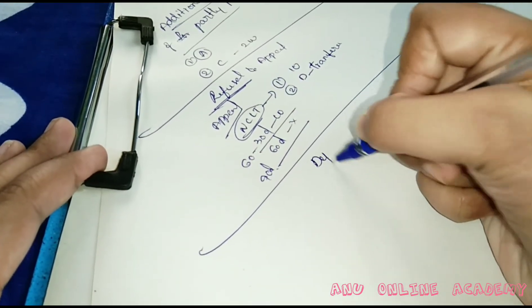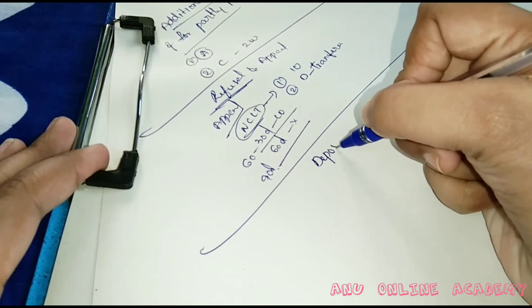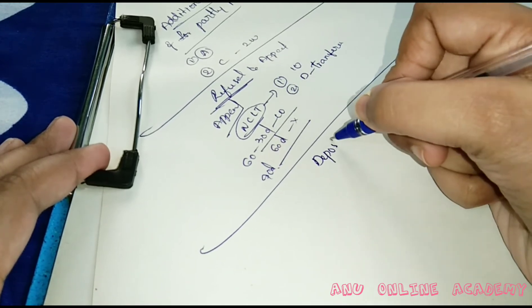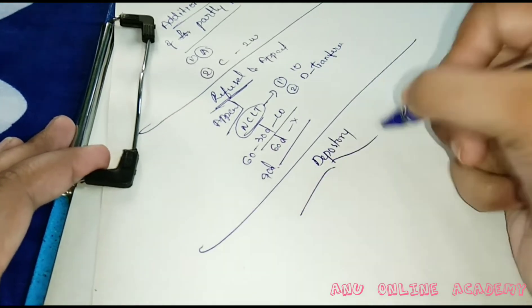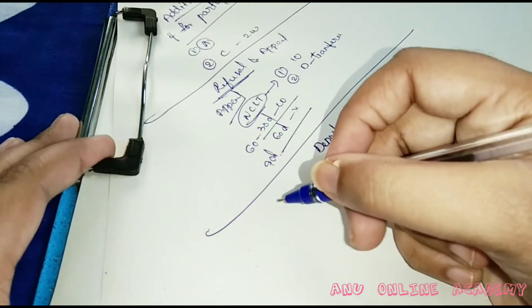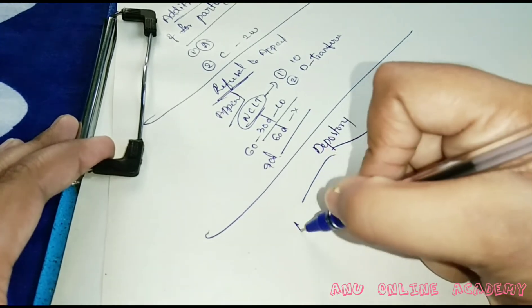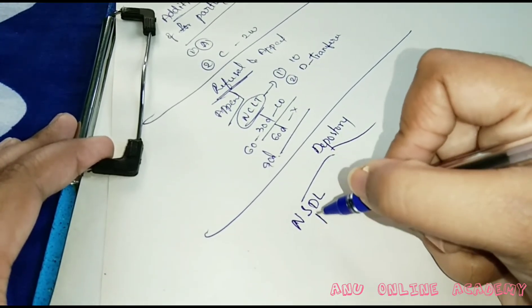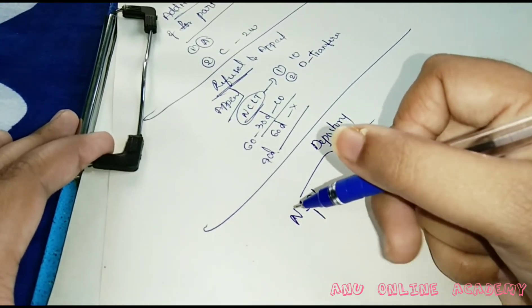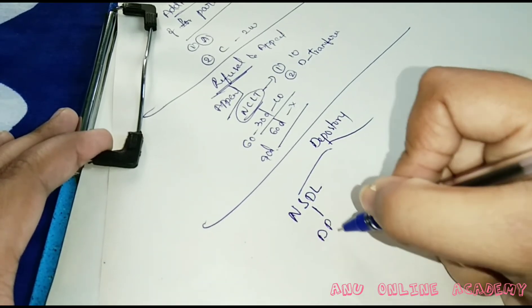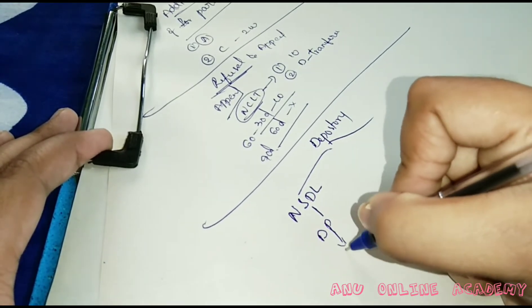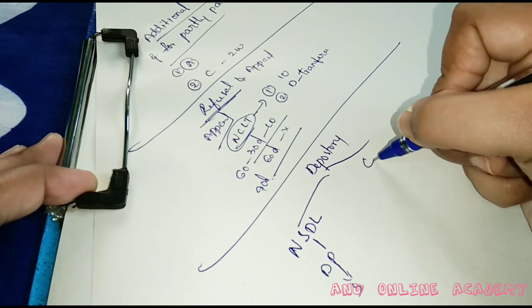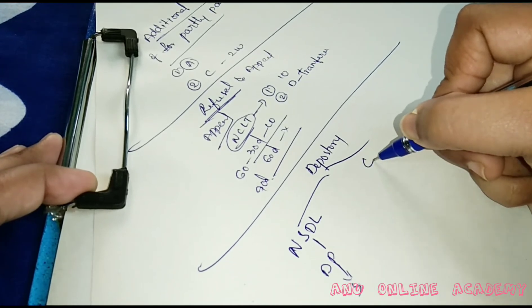Depository: under the National Securities Depository Act 1996, the two depositories are National Securities Depository Limited (NSDL) and Central Depository Service Limited (CDSL), which function from depository participant to shareholders.